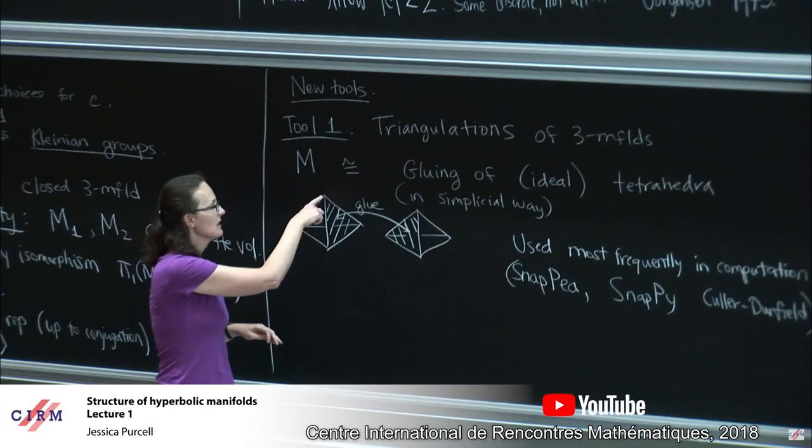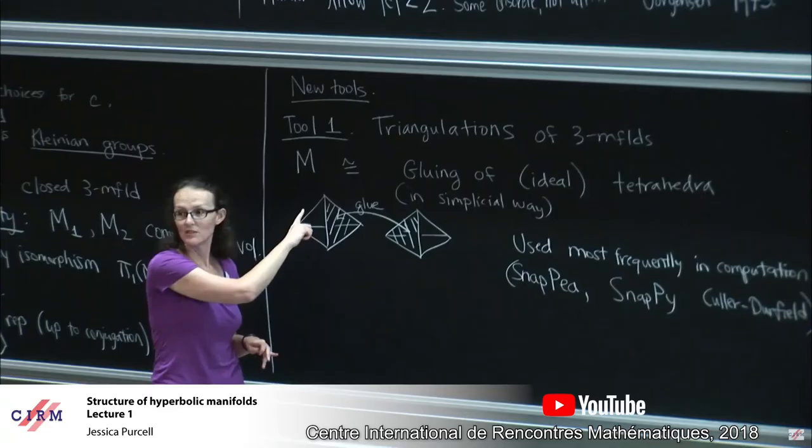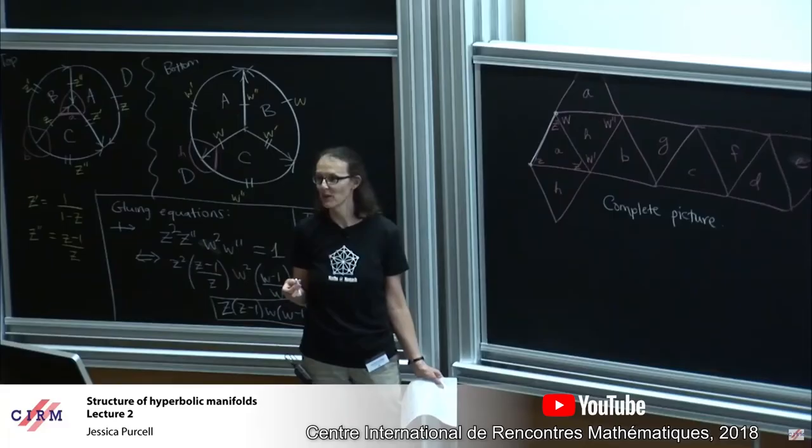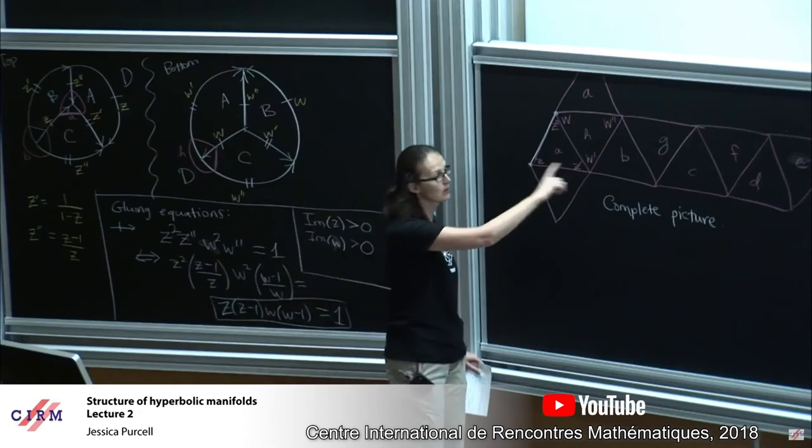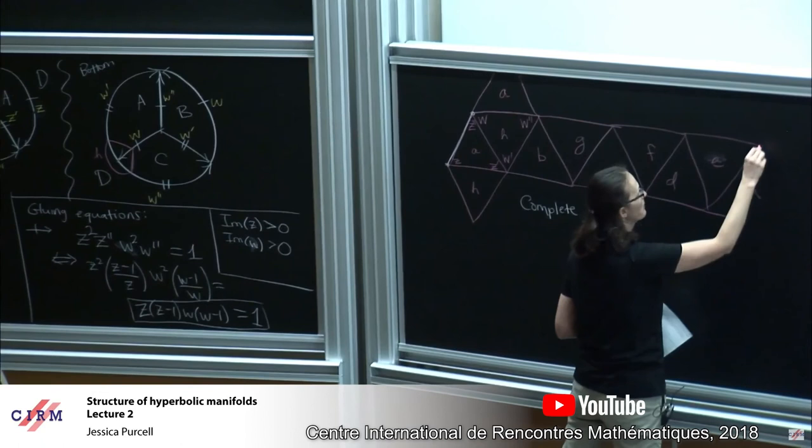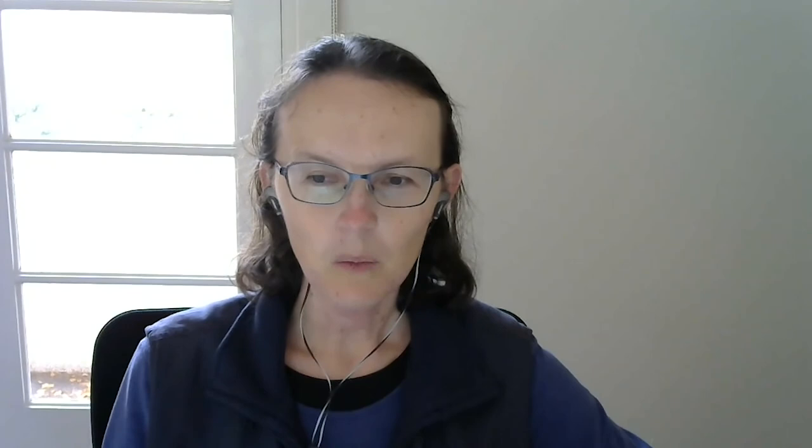Purcell is motivated by the opportunity to help the research community at large. It's very satisfying to solve a problem and understand a mathematical structure you haven't understood before, but it's important to take that one step further and communicate that understanding. That's something she really likes about mathematical research — describing objects and spaces in a way that other mathematicians can understand, growing the community around that. Most mathematical research today is done with other people: discussing a problem, looking at it from different perspectives, and coming up with new ideas together.